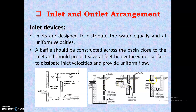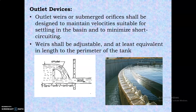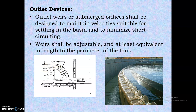At the inlet arrangements, inlets are designed to distribute water equally at uniform velocities. A baffle wall should be constructed across the basin close to the inlet, projected several feet below the water surface to dissipate inlet velocities and provide uniform flow. Baffle walls with multiple openings are used as inlet devices to reduce turbulence and velocity.